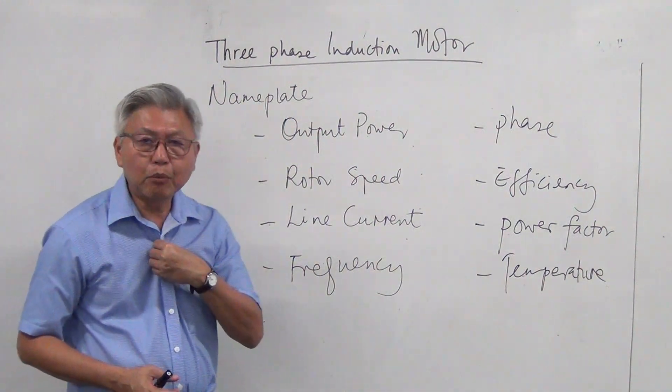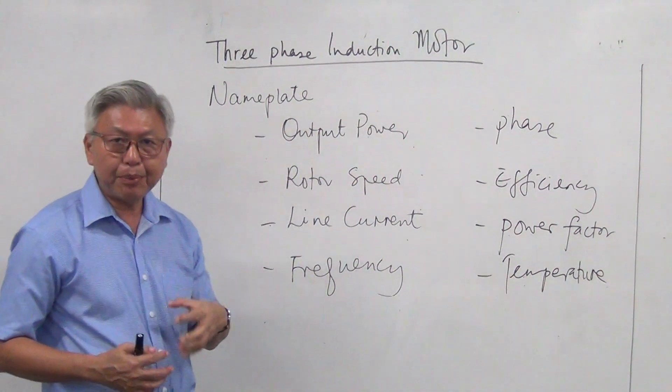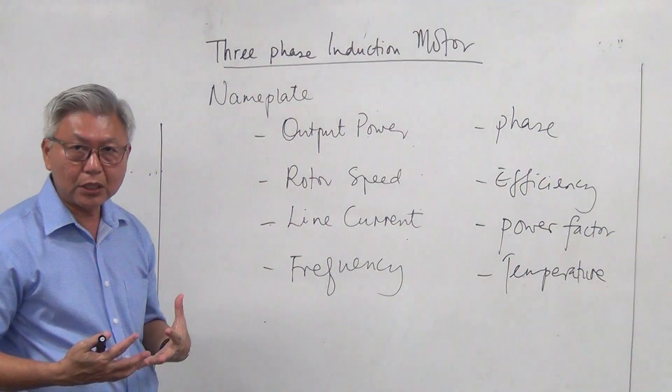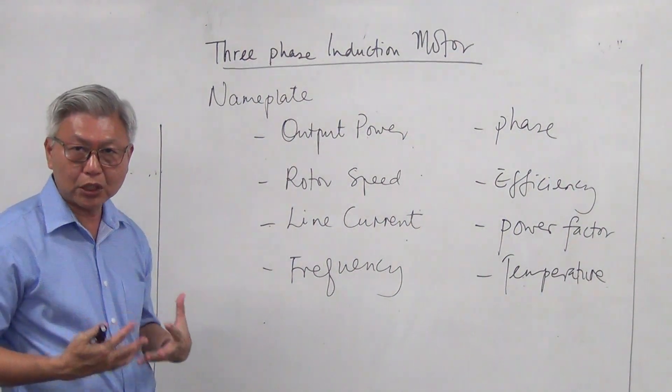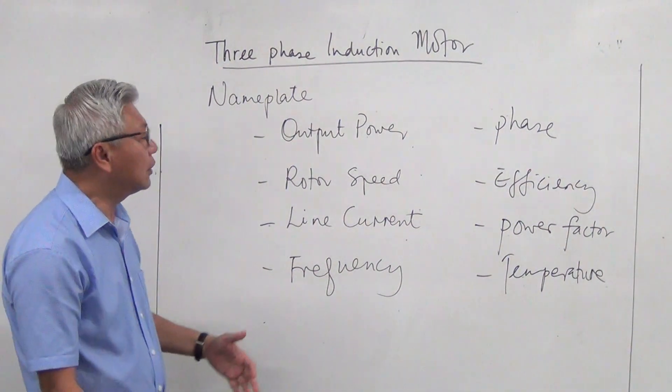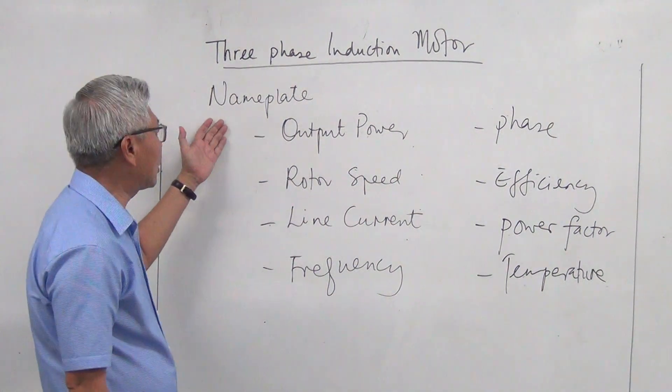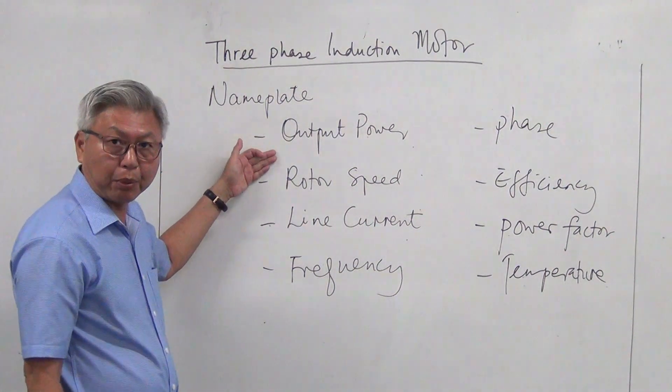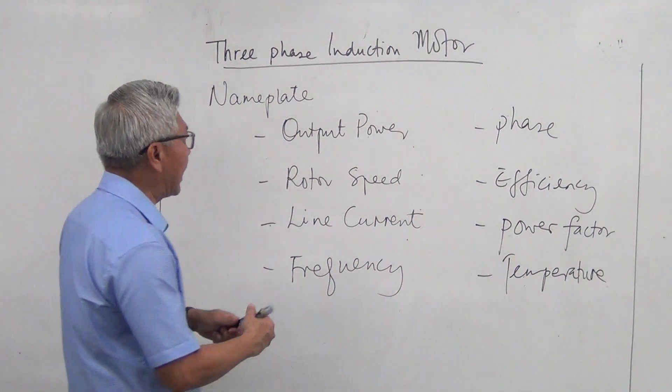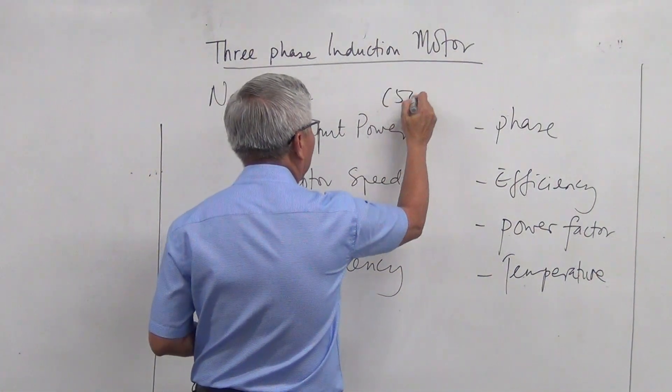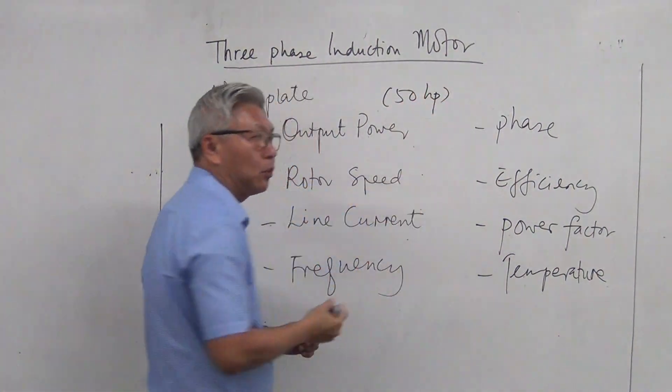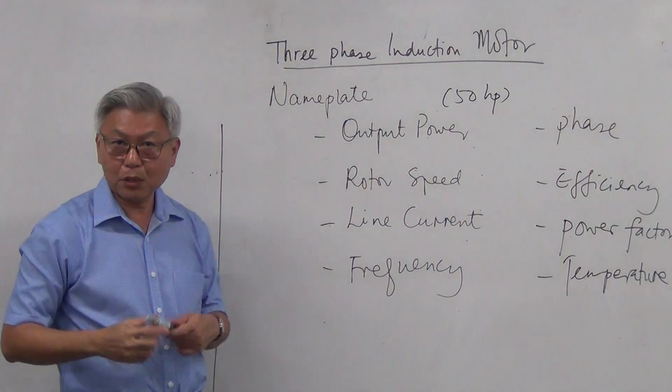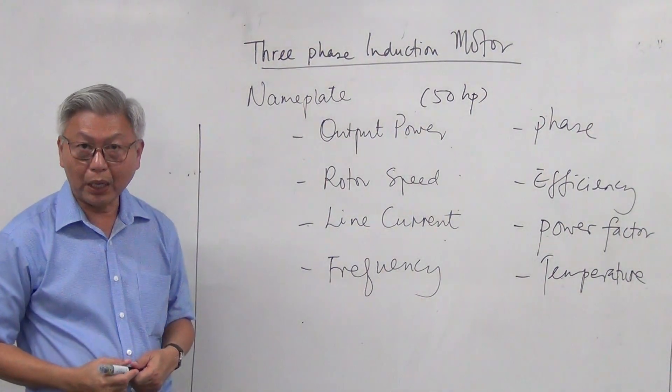Normally a motor would come with a nameplate. Nameplates give you specification, in other words, the rated conditions value. An example of a nameplate of an induction motor, they would specify the output power. For example, if it says that this is a 50 horsepower motor, in other words, it has 50 horsepower.